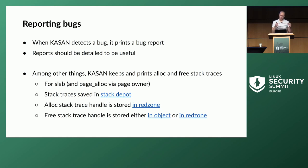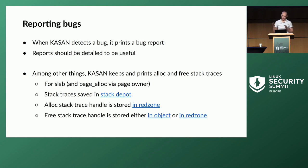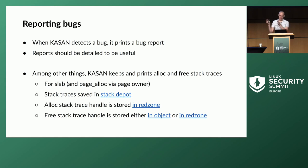These stack trace handles need to be associated with allocated or freed objects. KASAN stores stack handles for allocation stack traces in the red zones — since slab objects already have red zones, it makes sense to reuse them. For the free stack trace, KASAN tries to save it in the object itself to reuse space. For some object types, like ones accessible by RCU after being freed, it still stores them in the red zone.